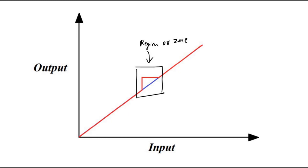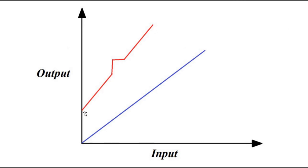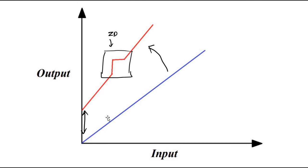Then we have combined drift, in which all three kinds of drift are present. There is zero drift because it is shifted by some constant amount at the start; then it rotates in one direction as the input is increasing, which is span drift; and one portion also experiences zonal drift. So all three kinds of drift are present here — this is combined drift.